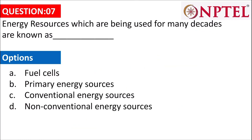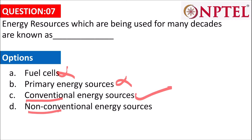The next question asks: energy resources which have been used for many decades are known as what? It is not about primary or secondary energy — it will always be conventional resources. So the answer is C.